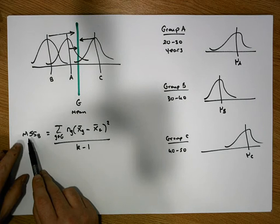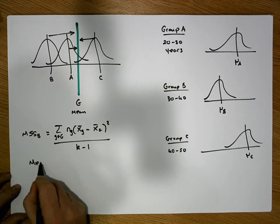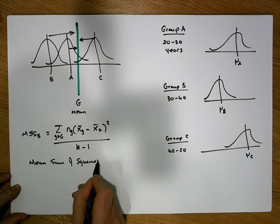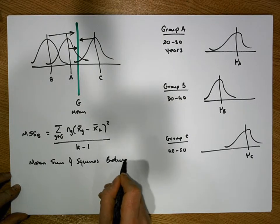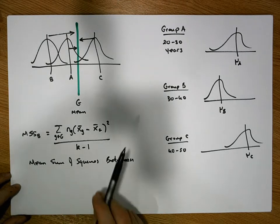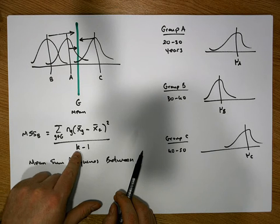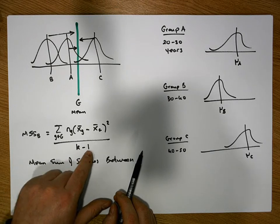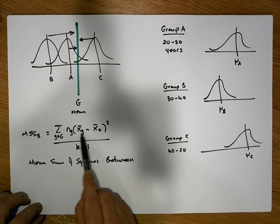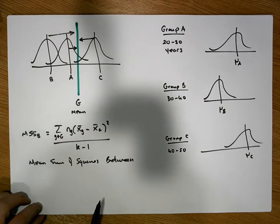Effectively, this mean sum of squares between measure is telling us, on average — because we're dividing by how many groups we have, although we're subtracting one — what the square distance is that the groups are away from this global mean value.